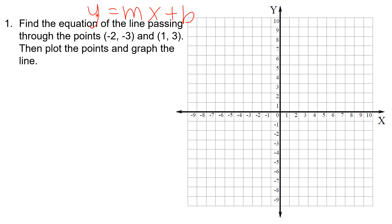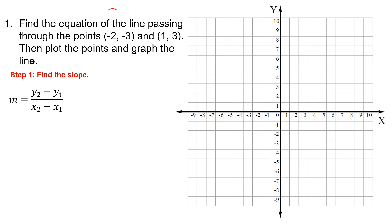Let's grab our slope formula: M equals Y2 minus Y1 over X2 minus X1, where X1, Y1 and X2, Y2 are points on the line. I always label my points first. So X1, Y1 is negative two, negative three, and X2, Y2 is one comma three. It doesn't matter the order in which you label these — as long as the subscripts match within each point, it does not matter. Now I'm going to plug in the numbers.